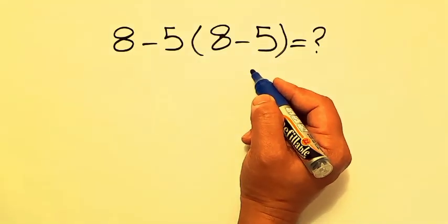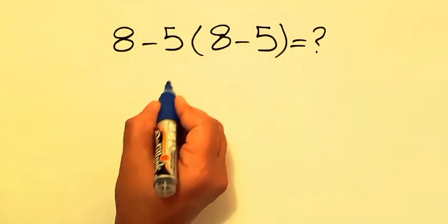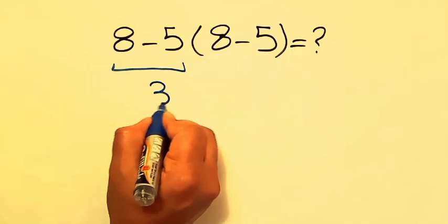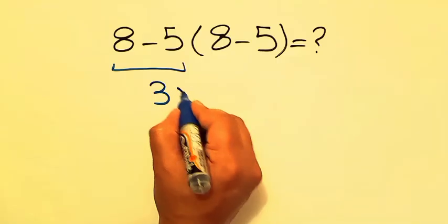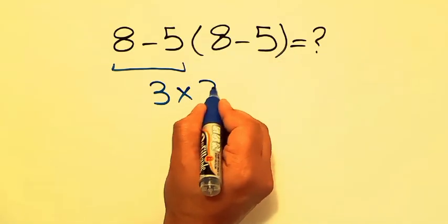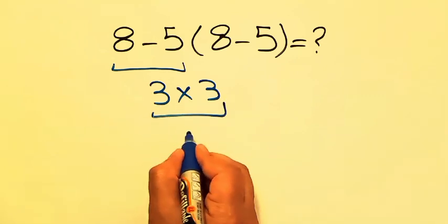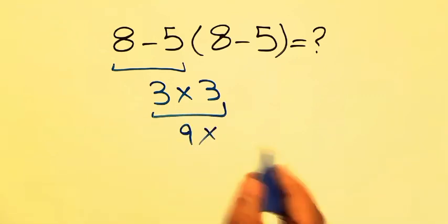Are you ready to solve? Let's go ahead and get it started. 8 minus 5 equals 3. And 3 times 8 minus 5 equals 3 again. So 3 times 3, which equals 9. But this answer is not correct.